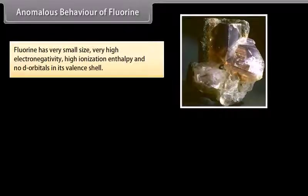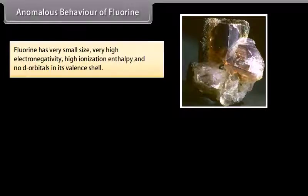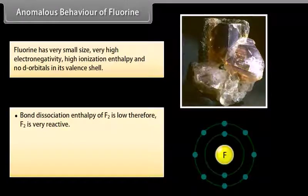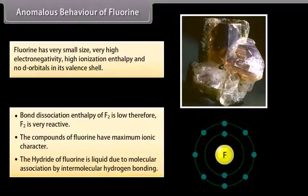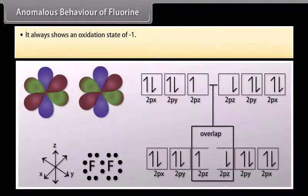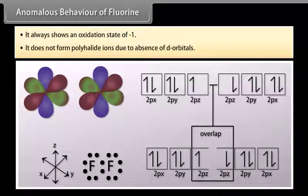Anomalous behavior of fluorine: Fluorine has a very small size, very high electronegativity, high ionization enthalpy, and no d-orbitals in its valence shell. It exhibits different behavior from other halogens in the following ways: the bond dissociation enthalpy of F₂ is low, making F₂ very reactive; the compounds of fluorine have maximum ionic character; the hydride of fluorine is liquid due to intermolecular hydrogen bonding; it always shows an oxidation state of −1; and it does not form polyhalide ions due to the absence of d-orbitals.